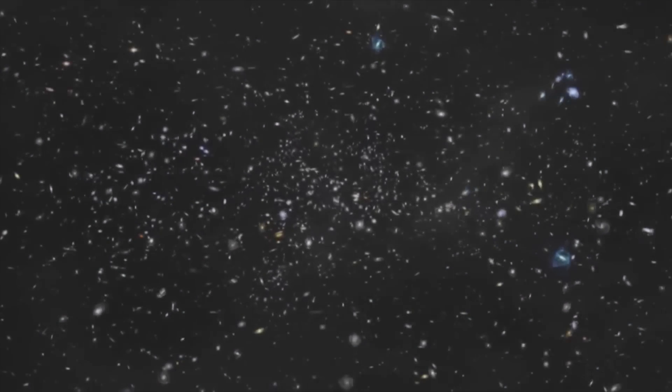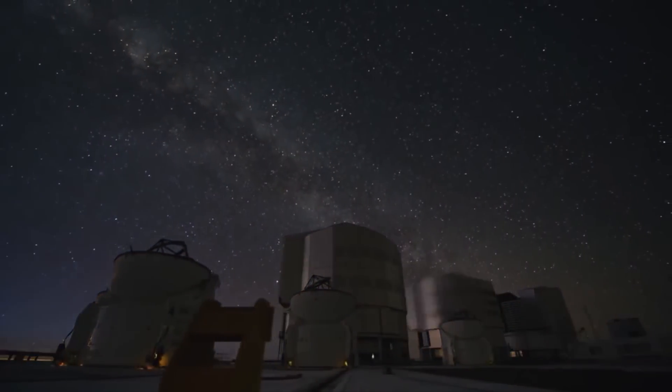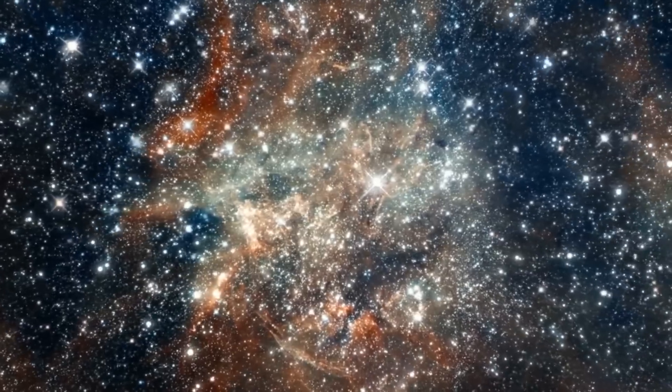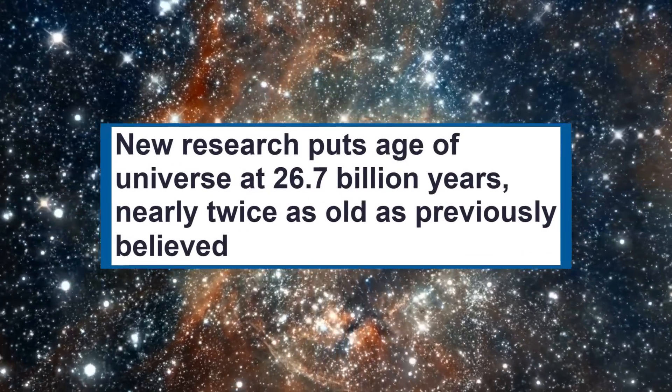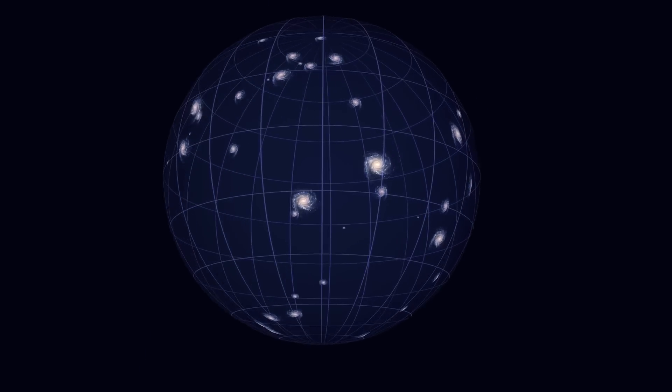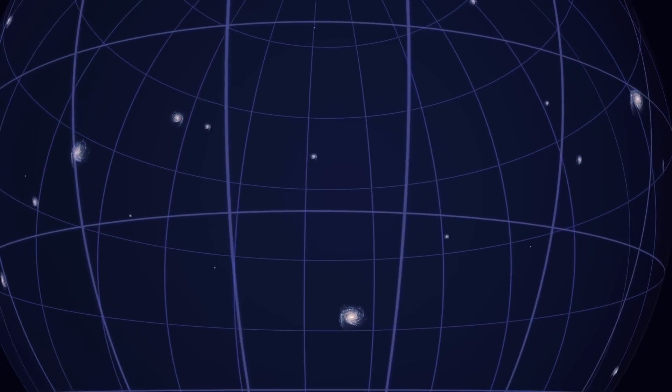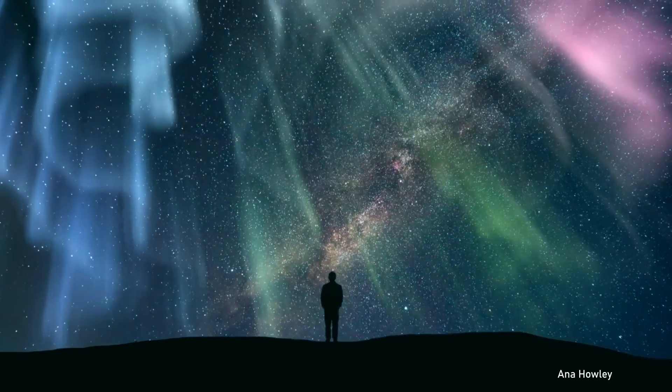What if everything we thought we knew about the cosmos, from its age and expansion to its very existence, is only a partial truth? What if the universe is twice as old as our calculations suggest? A riveting new study poses these audacious questions, contending that the universe might not be 13.8 billion years old, but up to 26.7 billion years old.